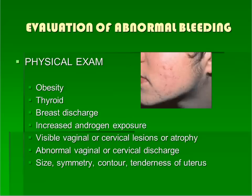The next step in the evaluation of a patient with abnormal uterine bleeding is a physical examination. Care should be given to note findings listed on this slide, which can point to a diagnosis.